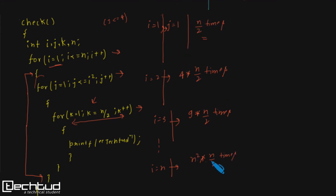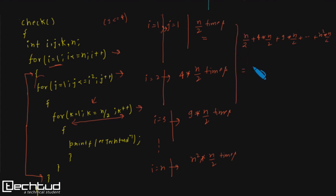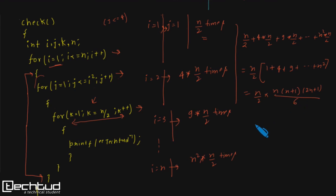Summing it all up: n/2 plus 4·(n/2) plus 9·(n/2) plus dot dot dot plus n²·(n/2). Taking n/2 common gives (n/2)·(1 + 4 + 9 + ... + n²), which is (n/2)·n(n+1)(2n+1)/6. After multiplying, the highest power of n is four, so the complexity of this program is O(n⁴). These were some iterative program examples and we will discuss more in later videos.